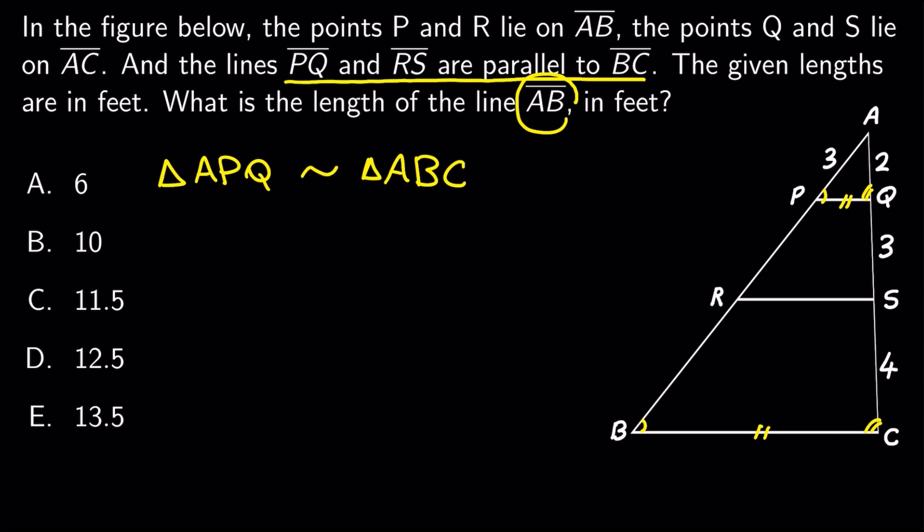As a result, the ratio of the corresponding sides are going to be the same. So, AP to AB is going to be the same as AQ to AC.